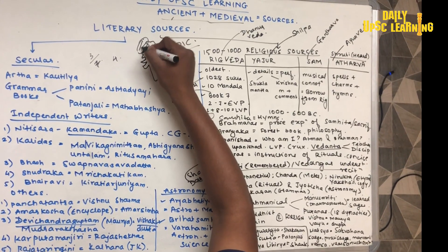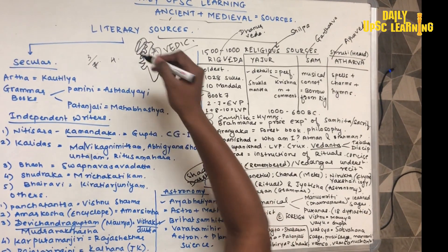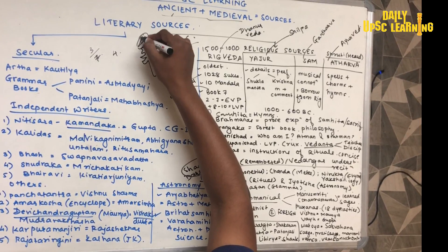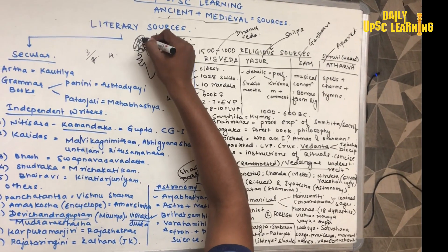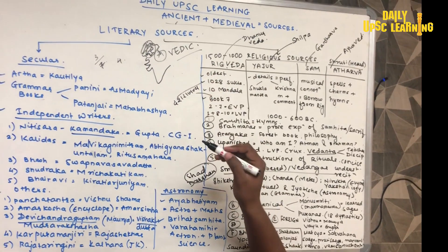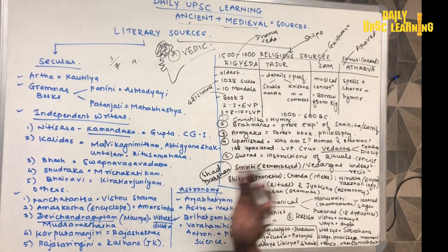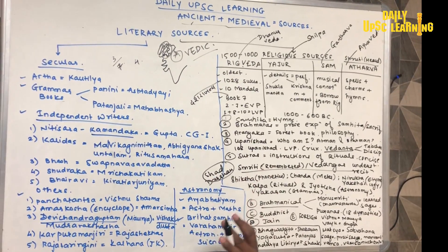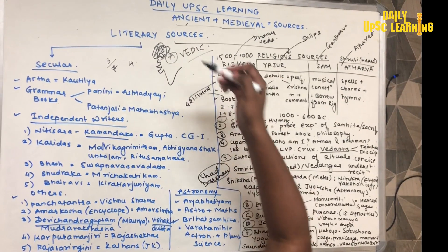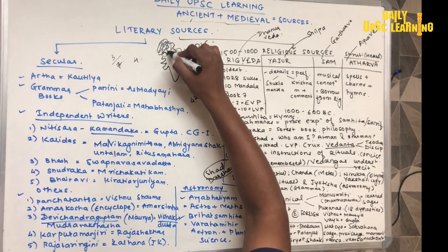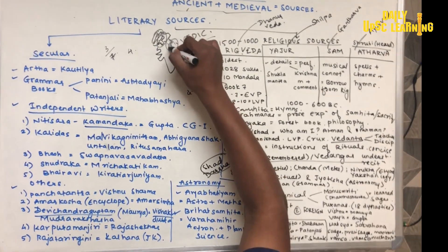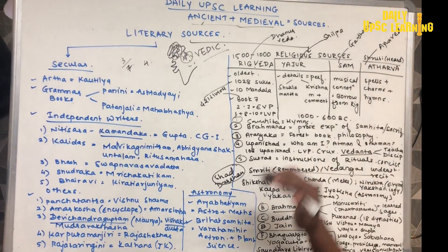This area is known as the Saptasindavay area, that is the Indus valley area. Those people who lived in this area were called Rigvedic people, and they were linguistic people. Indo-Aryans were linguistic people — a culture, but not a community. After that, when they migrated towards the Ganga, that is the Indo-Gangetic plains, this is called the Later Vedic period.